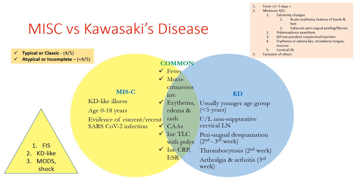Kawasaki disease is usually seen in younger age groups, less than 5 years. So confusion between MIS-C and KD arises primarily in younger children. KD usually presents with unilateral non-suppurated cervical lymphadenopathy, not commonly seen in MIS-C. Periungual desquamation is visible in the 2nd to 3rd week in KD, and thrombocytosis starts from the 2nd week — whereas in MIS-C, thrombocytopenia is present. Arthralgia and arthritis can develop in KD from the 3rd week onwards.